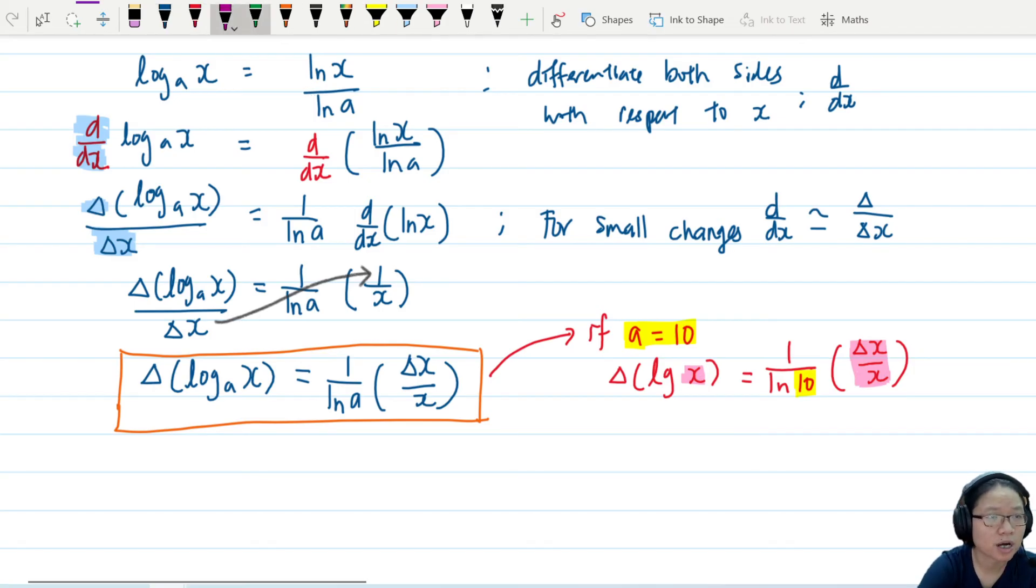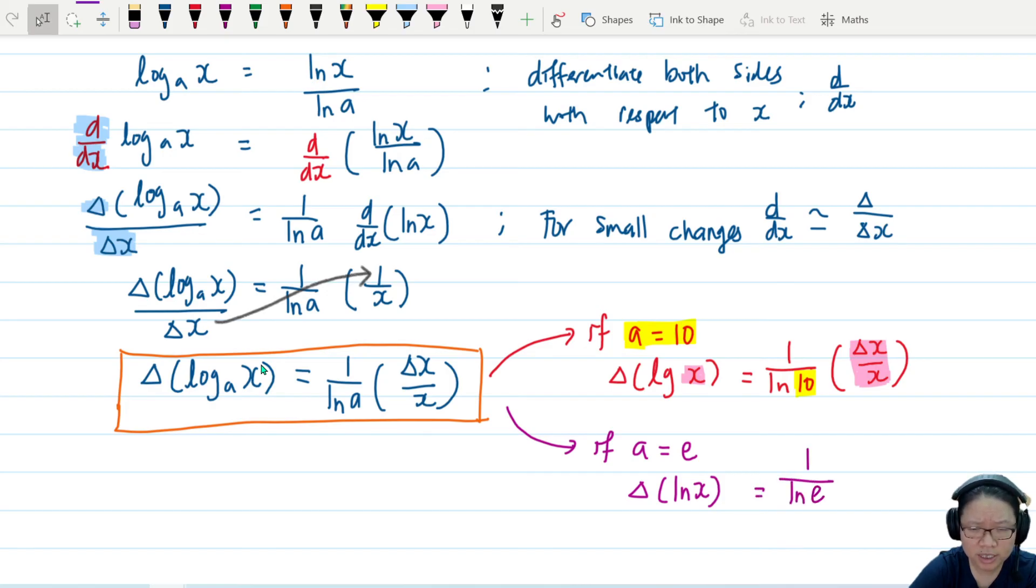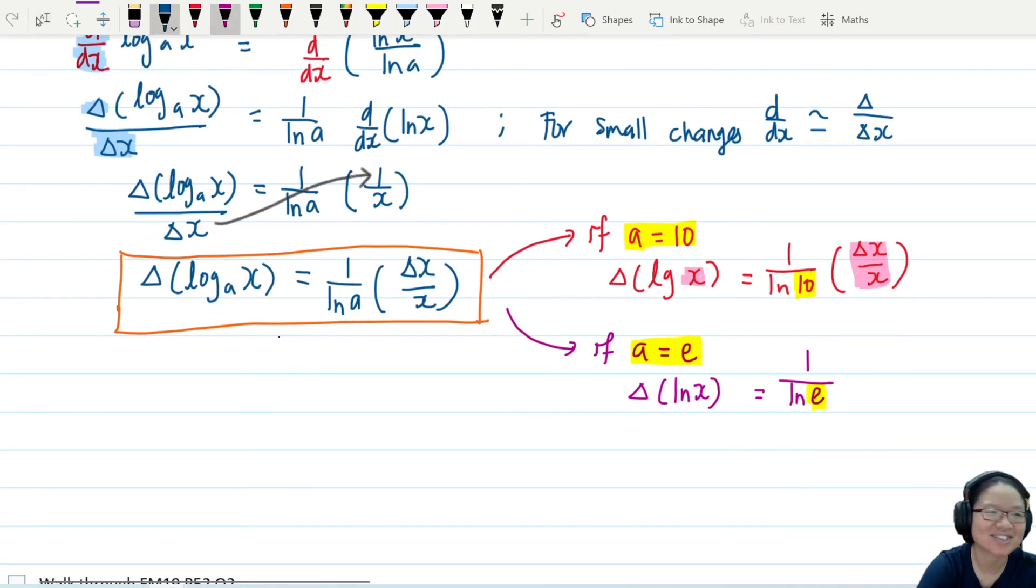Second option. If a is equal to natural log. So now, on this side, it will be log e x, which is ln x. So uncertainty for ln x will be equal to 1 over ln e. So if you remember our previous video, ln e is actually 1. So I like this, because it's got 1, uncertainty in x over x. So ln e is 1. This whole thing become 1. So finally, I will have the uncertainty in ln x is equal to uncertainty in x over x. Wow.